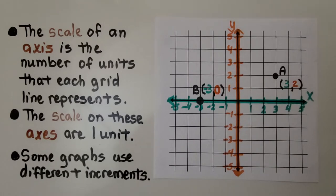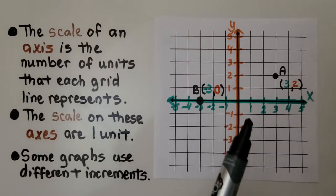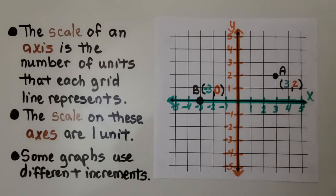The scale of an axis is the number of units that each grid line represents. The scale on these axes are 1 unit. It's going 1, 2, 3, 4. Some graphs use different increments.